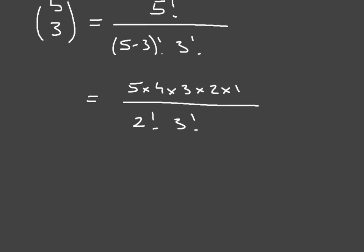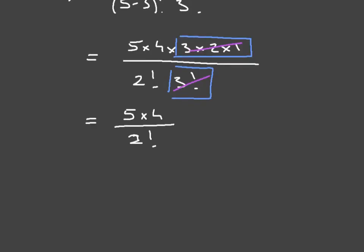Here's the thing: if you look at the numerator we can see that we have 3 times 2 times 1, but that's exactly the same thing as factorial of 3. So those two cancel out and already this is simplified quite a bit. We're now left with 5 times 4 over 2 factorial or factorial of 2.